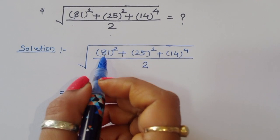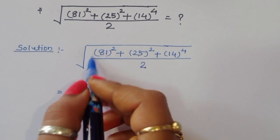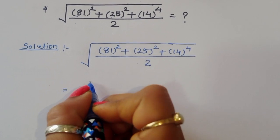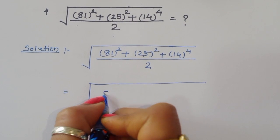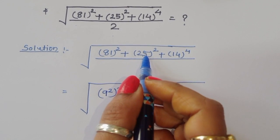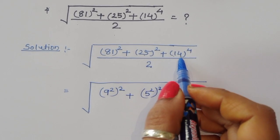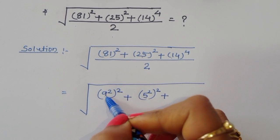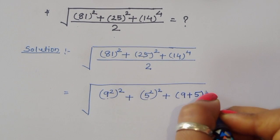We can convert each term into power-4 form to simplify. So 81² becomes (9²)² whole square, and 25² becomes (5²)² whole square. Notice that 9 + 5 = 14, so 14 can be written as (9+5), giving us (9+5)⁴.